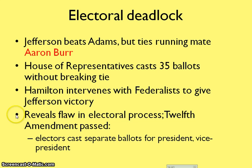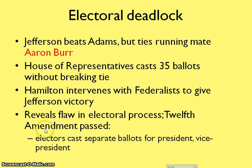This whole electoral process also reveals that there are still problems in the Constitution and the government. This leads to the 12th Amendment being passed. The 12th Amendment requires electors to cast separate ballots for president and vice president. Because Aaron Burr was supposed to be Jefferson's vice president, but got the same amount of votes as Jefferson, that is why they struggled to decide who became the president.